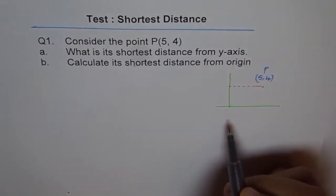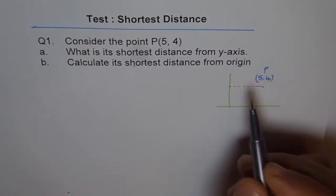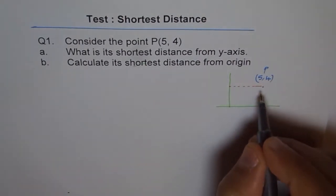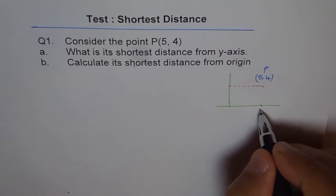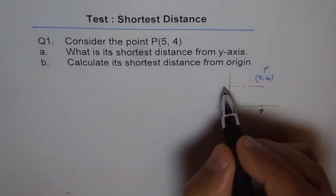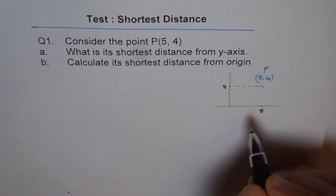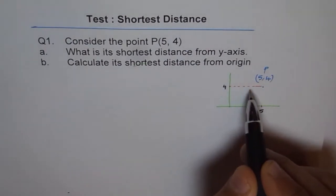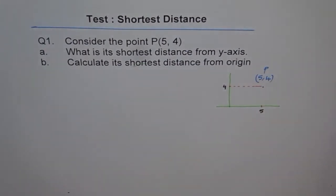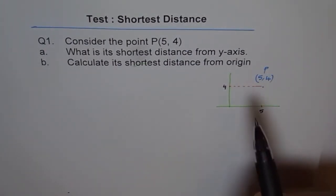So how much is this distance? If you see the coordinates, then you know the answer, correct? This is 5 units from here and 4 units from there, correct? So the shortest distance is 5. Do you see that? 5 is the shortest distance from y-axis.